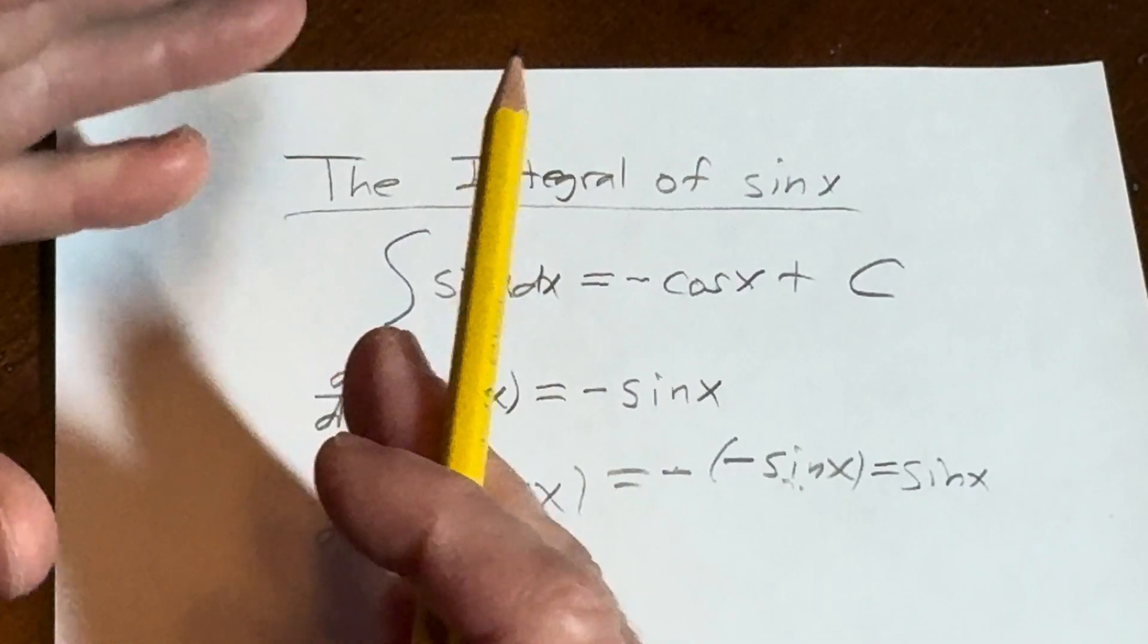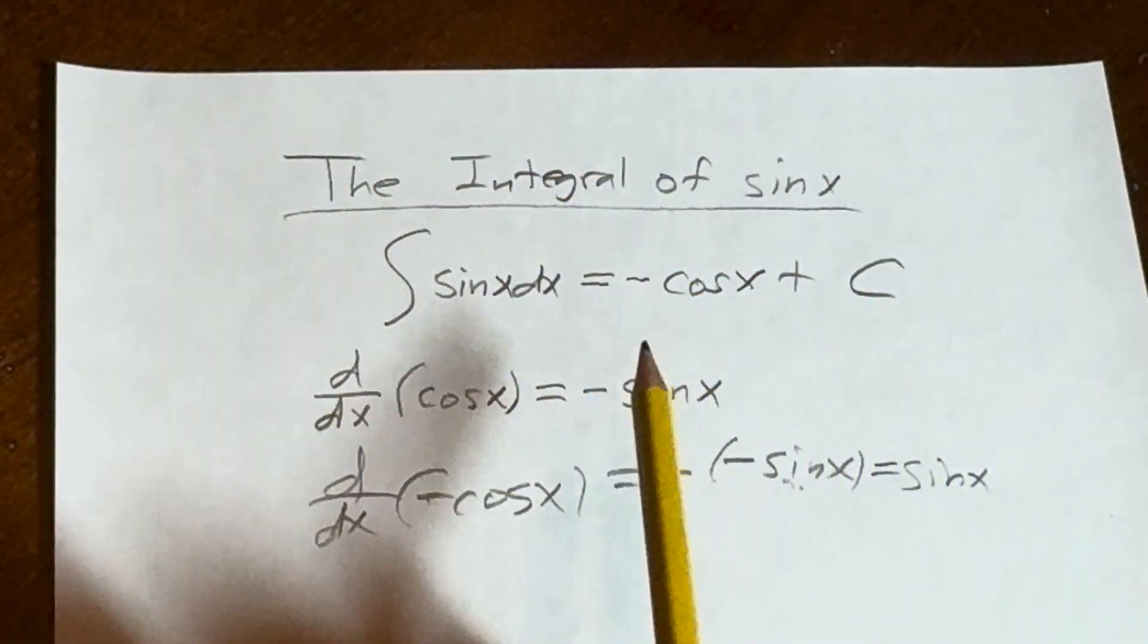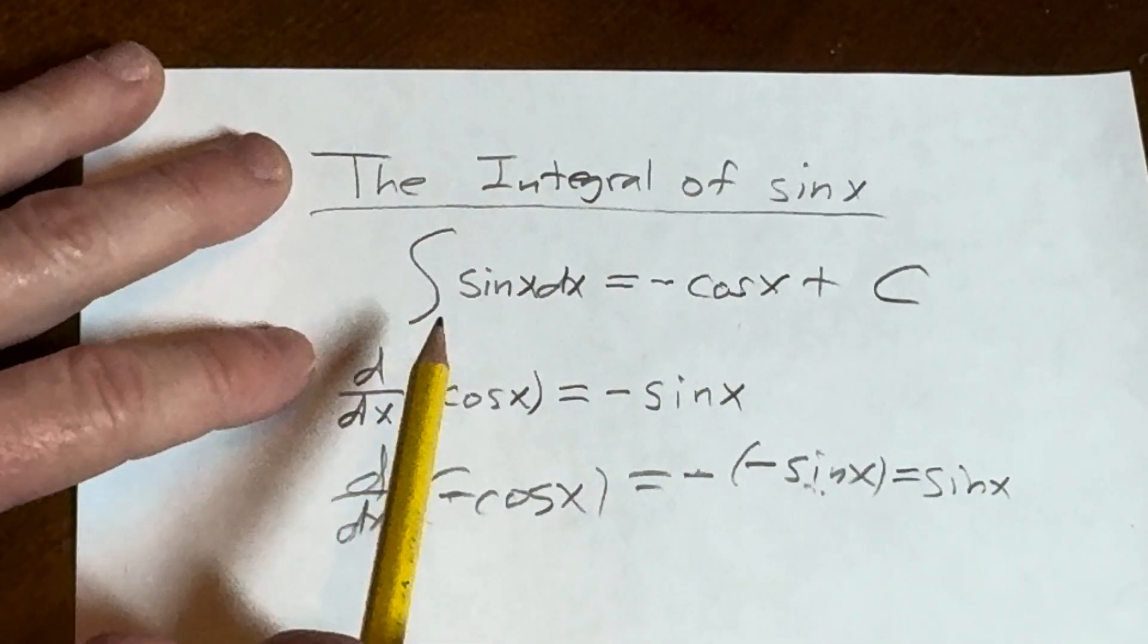Well, the derivative of cosine is negative sine. So the derivative of negative cosine is going to give you a positive sine.